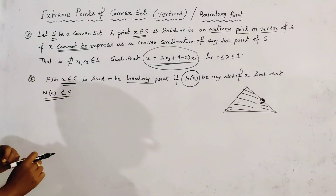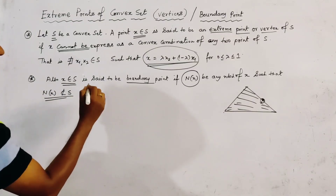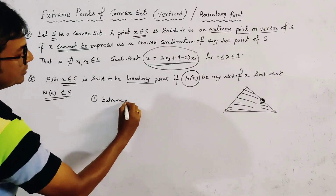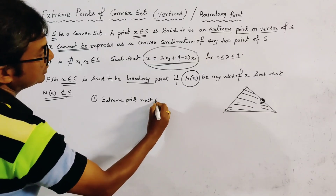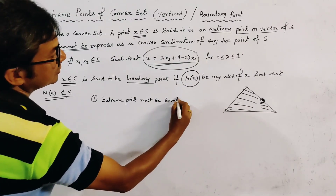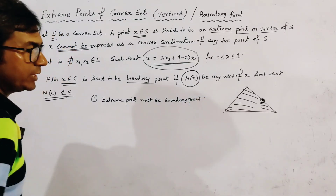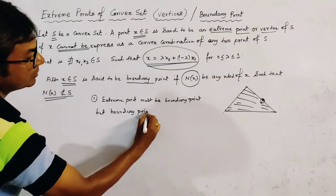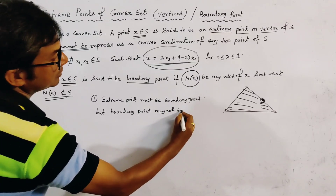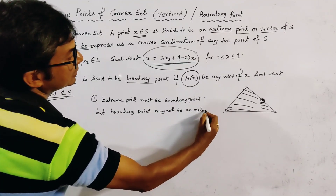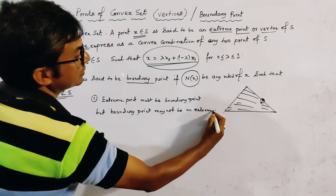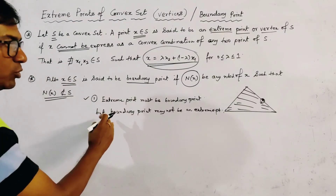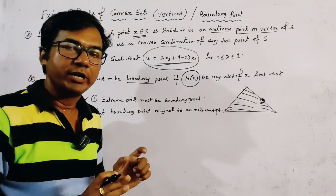From these two definitions, it is clear that an extreme point must be a boundary point. This is an important property of extreme points: every extreme point must be a boundary point, but not all boundary points are extreme points.